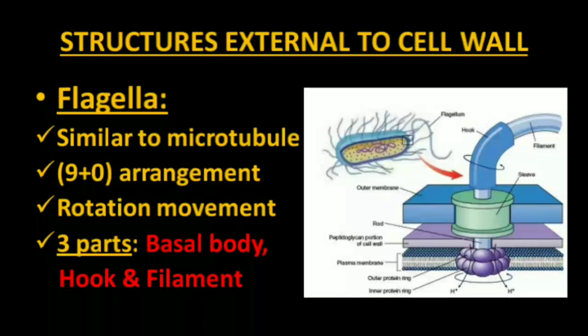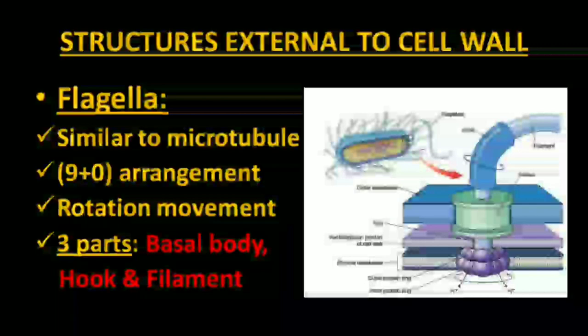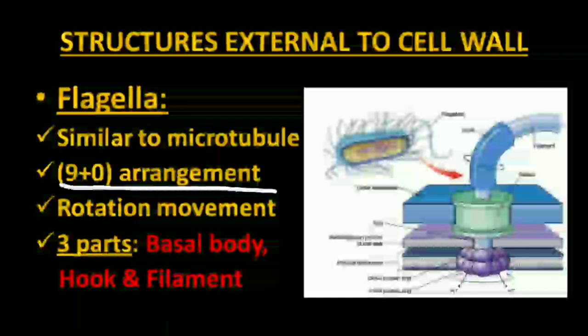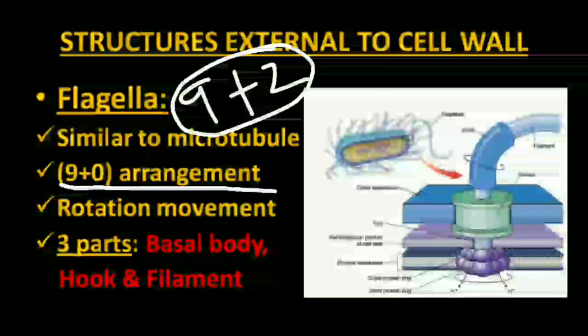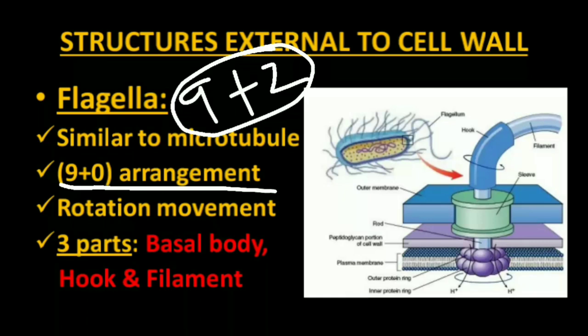The next structure external to the cell wall is flagella. Flagella is a single-stranded structure similar to microtubular fiber, but it contains a 9+0 arrangement — very important. Please don't forget: it is 9+0, unlike the typical 9+2 arrangement in eukaryotes. They move by rotational movement, that is backward pushing of the medium, so they always move forward.